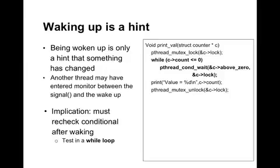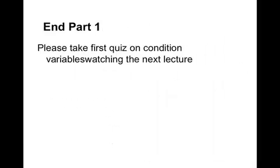The implication is that when using a condition variable to wait for something, you have to check your conditional predicate inside a loop — typically a while loop. The correct code for the counter example uses while (c->count <= 0) pthread_cond_wait instead of an if statement. This means that if the thread wakes up it will retest whether the counter is above zero. If it is not above zero it will go back to sleep; if it is above zero it keeps going. Most of the time the condition you're waiting for will have happened and you don't need the while statement, but to make your code correct in all cases you need to use the while loop. This is the end of the first part of the lecture on monitors and condition variables. Please take the first quiz on condition variables before watching the next lecture.